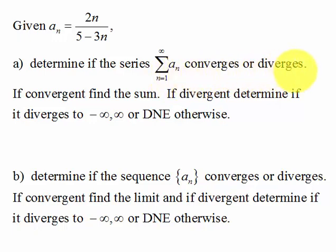We're going to determine if that converges or diverges, and if it's convergent we're going to find its sum. And if it's divergent we're going to decide if it goes to negative infinity, infinity, or does not exist otherwise.